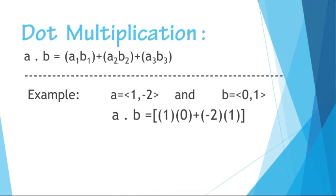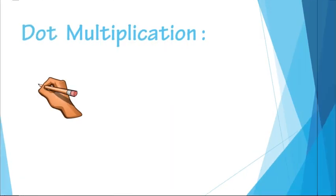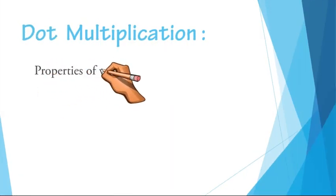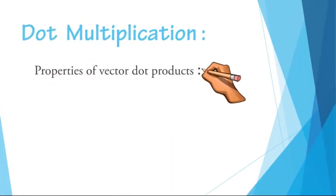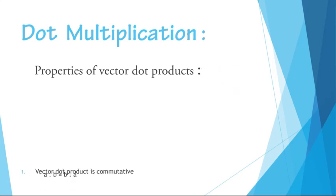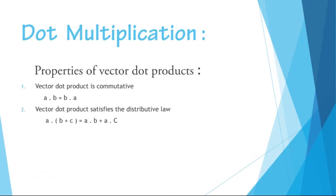Now we will discuss some properties of vector dot products. First, the dot product is commutative: a·b = b·a. The vector dot product satisfies the distributive law: a·(b + c) = a·b + a·c.